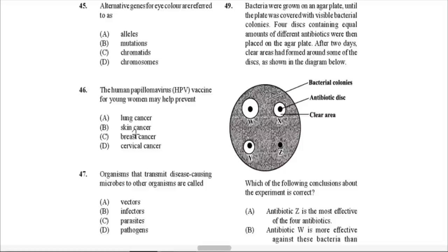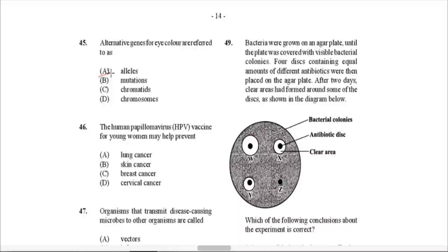Question 45: Alternative genes for eye color are referred to as what? Alternative genes means different forms of the same gene — that would be alleles. You may have an allele for brown eyes versus an allele for blue eyes, et cetera.